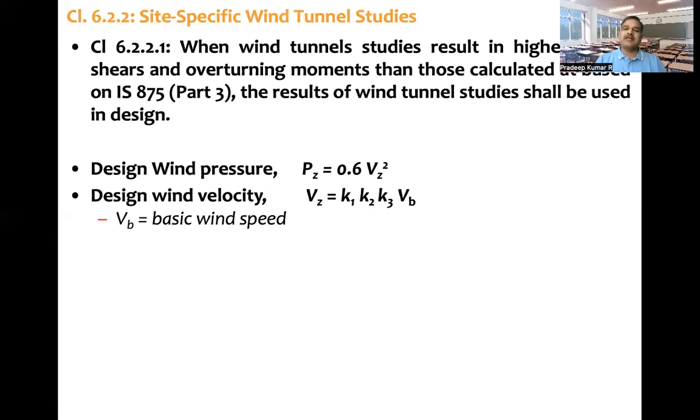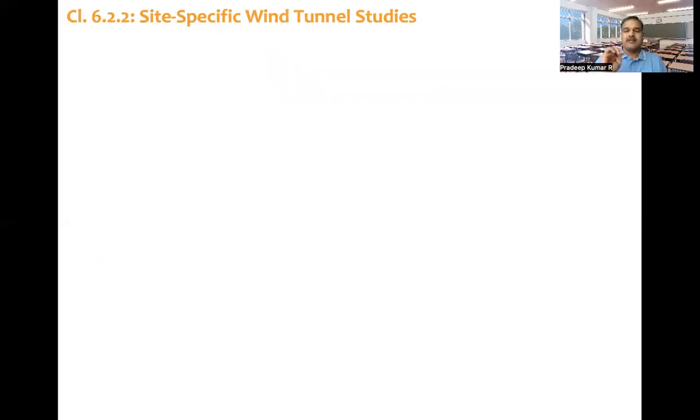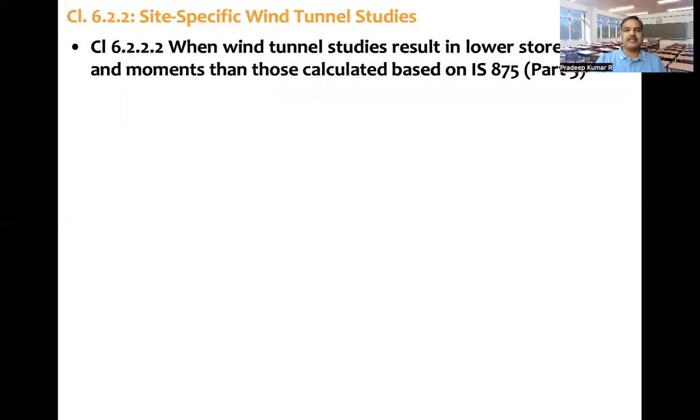There is a wind zonation diagram available in IS 875 Part 3. Based on the zone, Vb is decided. K1 is based on risk coefficient, K2 factor is terrain, height, and structure size factor, and K3 is the topography factor. Based on these three factors and basic wind speed, we can get the wind pressure and the storey shear and overturning moment. Clause 6.2.2.1 says if wind tunnel test results are more than IS 875 calculated values, then use the wind tunnel test results for designing the structure.